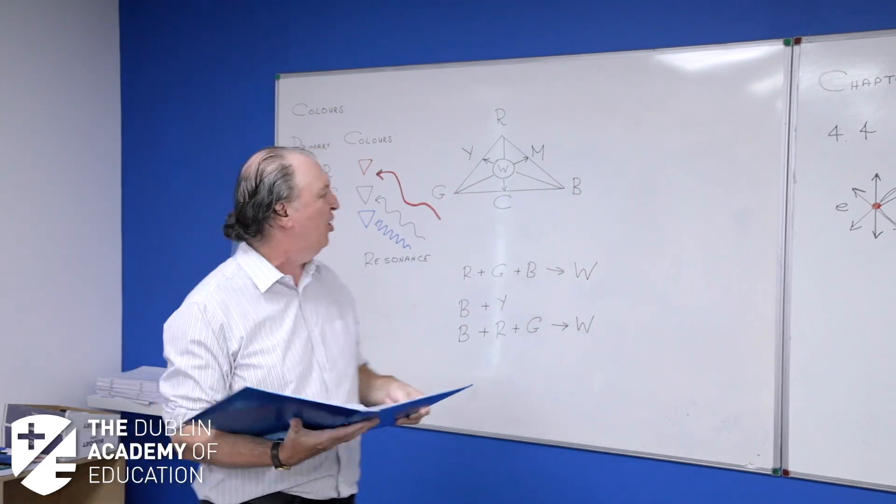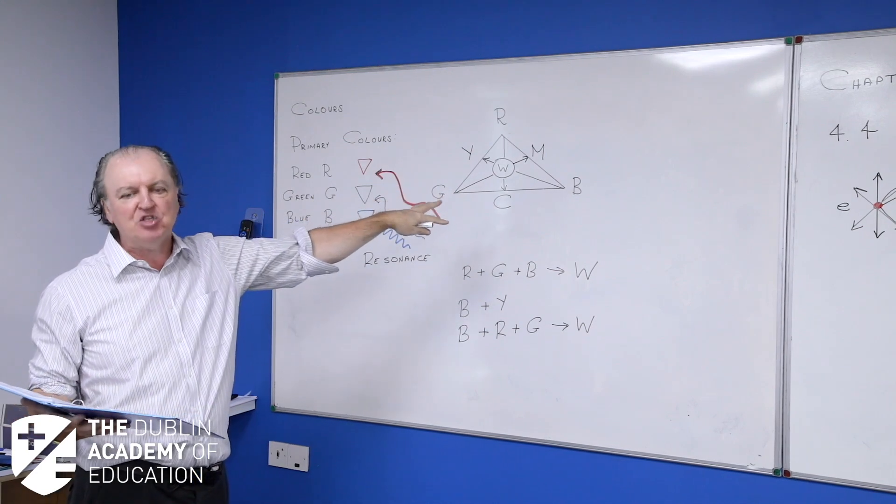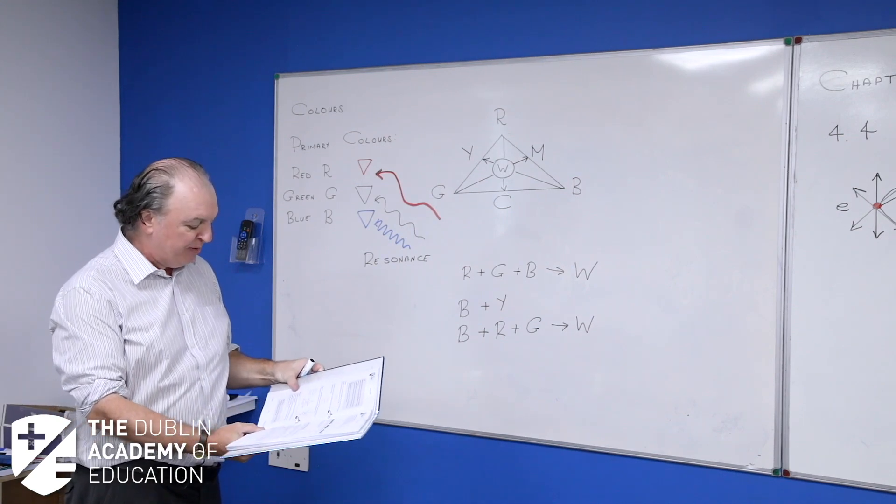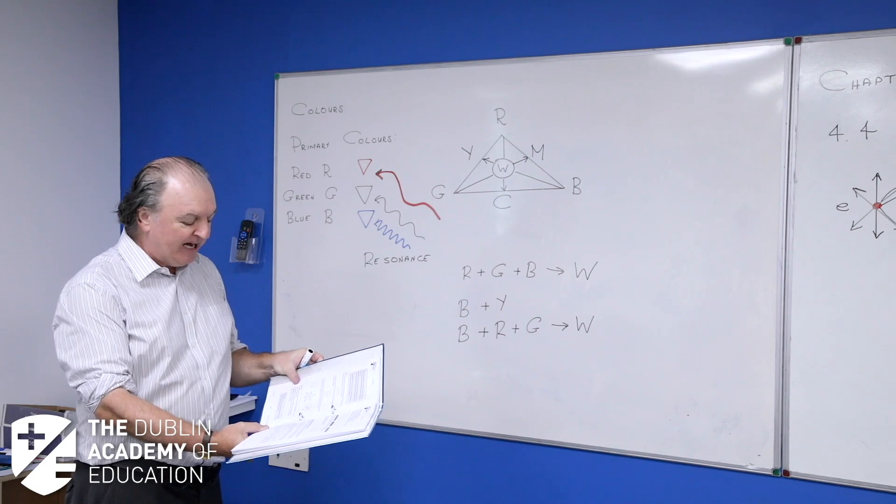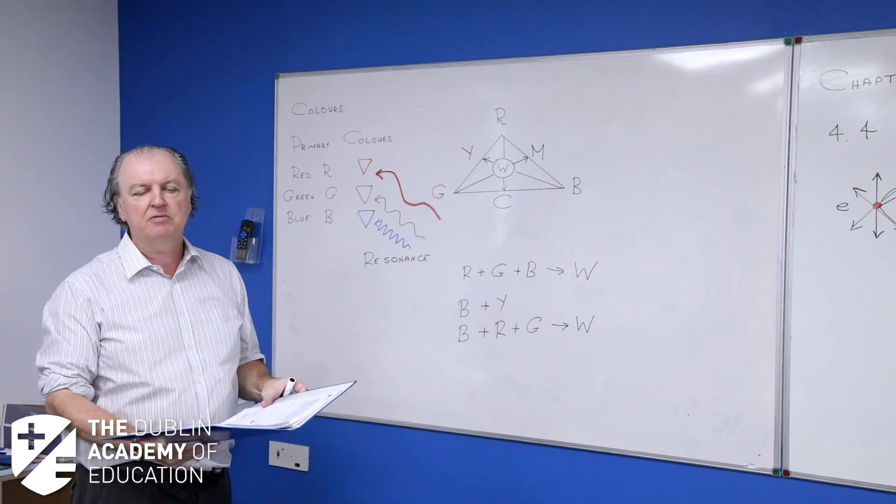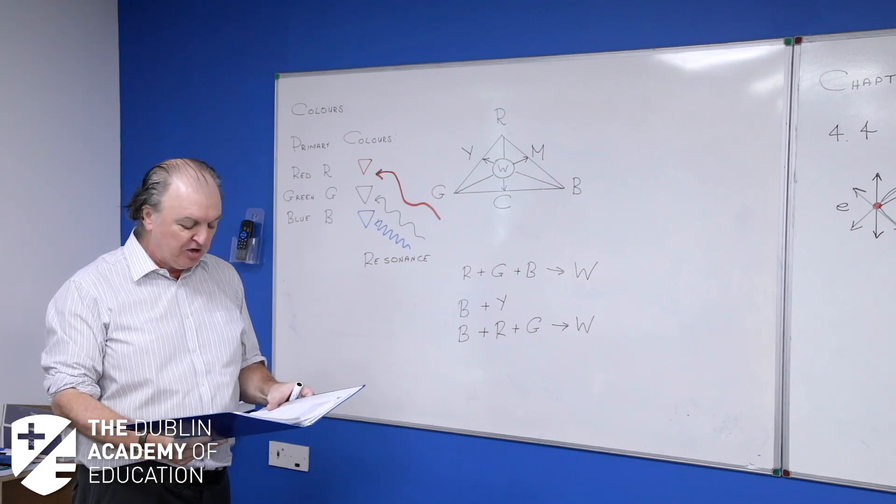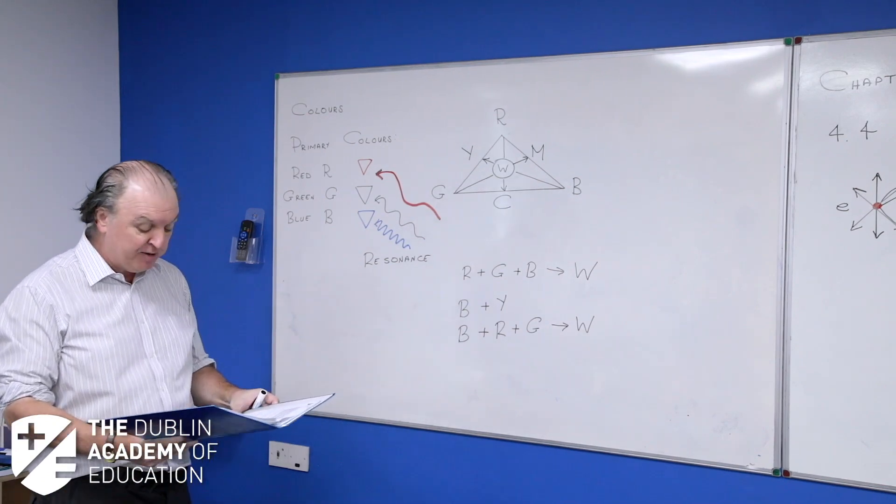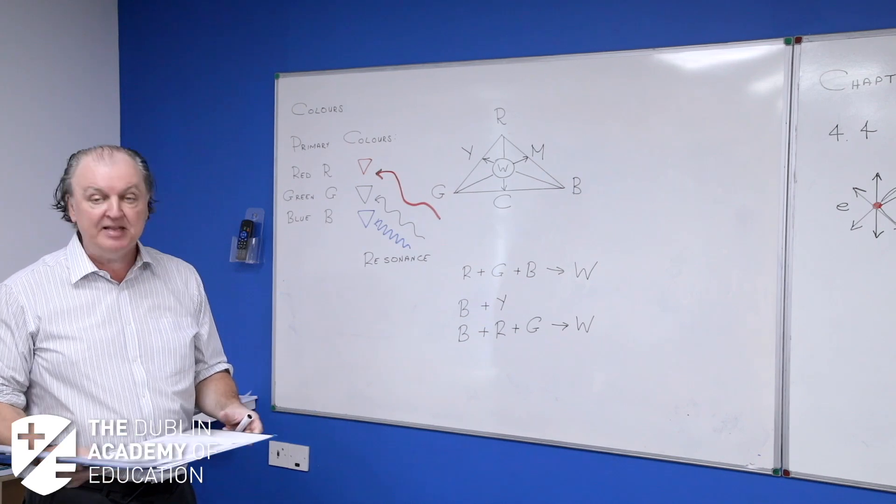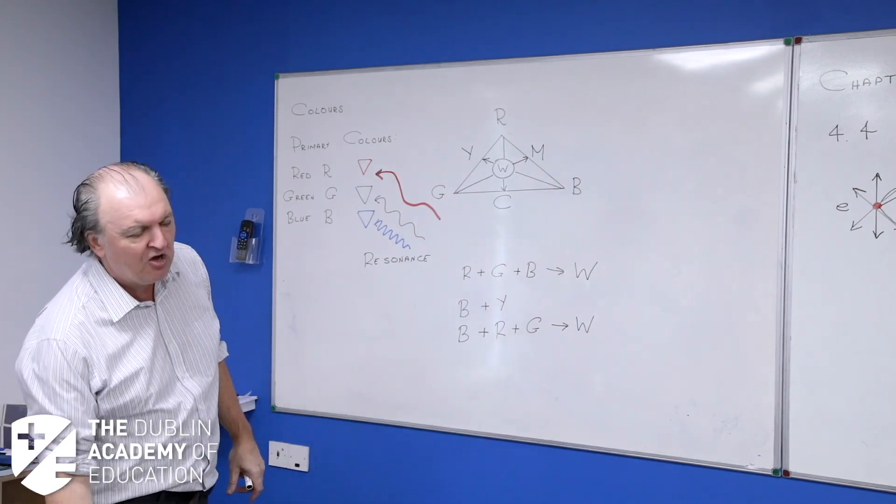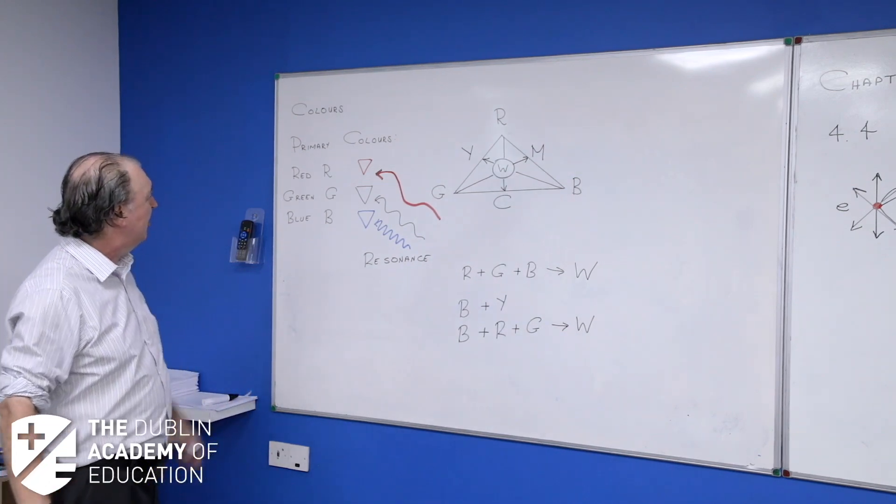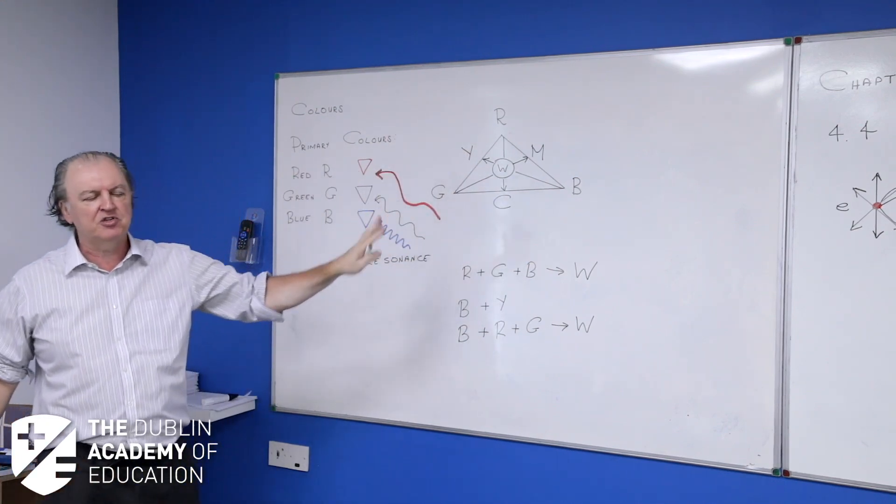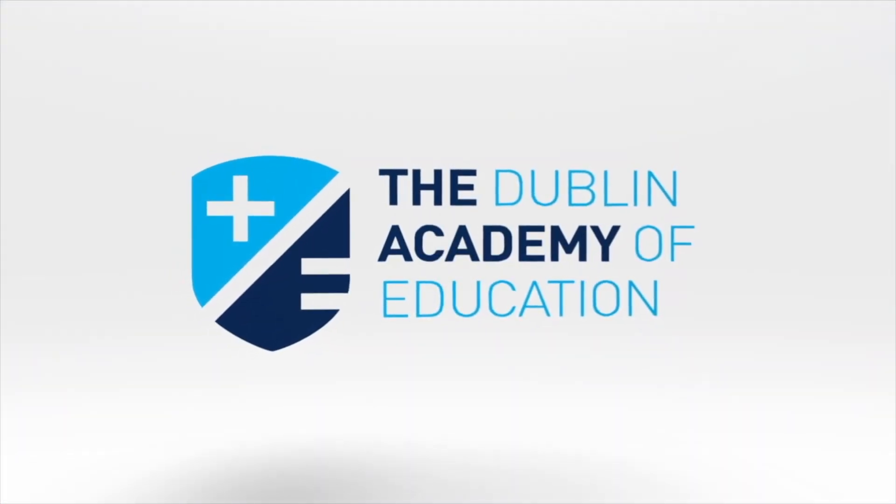So once you know that color triangle there, you basically have all the information that you need about colors for the leaving search. And you have a load of definitions down there. The primary colors are colors of light which cannot be made by adding or mixing any other colors. That's why they're primary. They're pure. The secondary colors are made by adding two primaries. And the complementary colors are a primary and the secondary color when mixed together to give you white light. So that's all I need to essentially know about colors. I mean this explanation about the cones here, they won't be asking that. Basically, know your color triangle and know your definitions and that's fine.